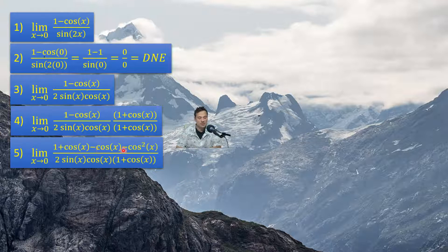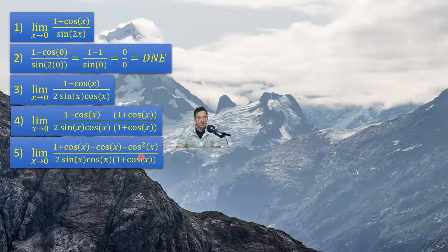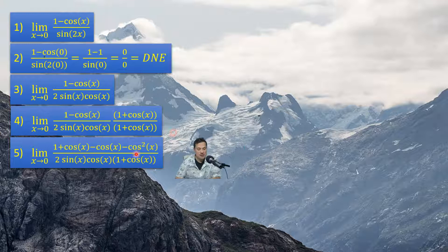The next step: when you go from 4 to 5, you have 1 times 1, which is 1. 1 times cos x is cos x — I'm just FOILing, basically. Negative cos x times 1 is negative cos x. And then negative cos x times positive cos x is negative cos squared x. That gives us this. Also in the bottom, you end up with 2 sin x cos x multiplying 1 plus cos x from step 4. That's the new denominator.